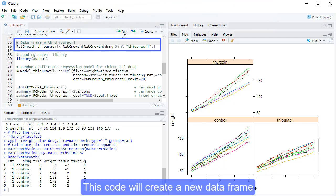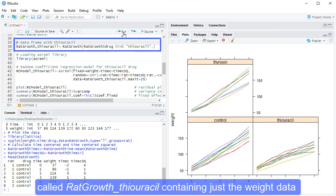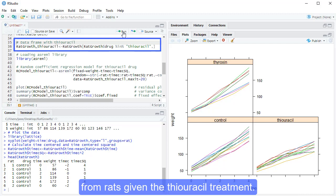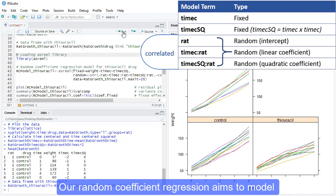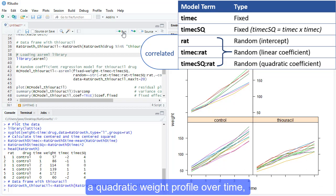This code will create a new data frame called ratgrowth underscore thiouracil, containing just the weight data from rats given the thiouracil treatment. Our random coefficient regression aims to model a quadratic weight profile over time, allowing for random variation about the quadratic parameters for the individual rats.